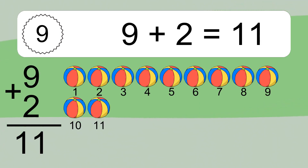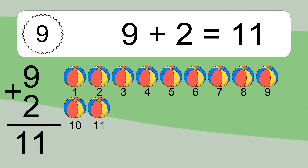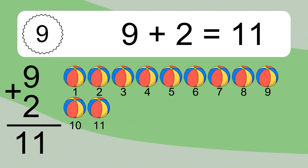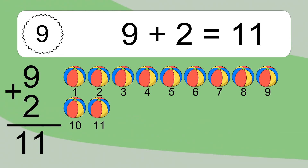9 plus 2 equals what? 9 plus 2 equals 11. Let's count it: 1, 2, 3, 4, 5, 6, 7, 8, 9, 10, 11.